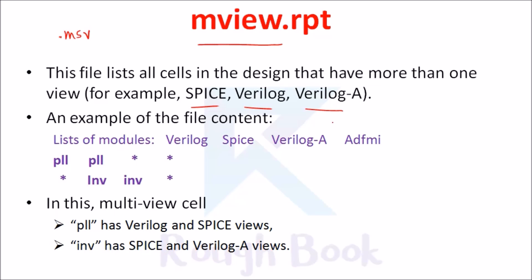A cell with more than one view is known as a multi-view cell. Multi-view cell means that the cell contains definitions of both spice and verilog, or spice and vhdl, or verilog and vhdl, or other combinations. This is known as a multi-view cell — having definitions of more than one view.